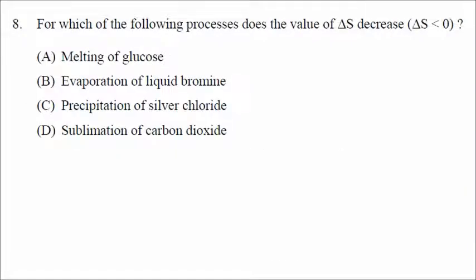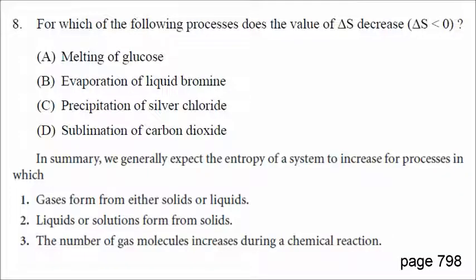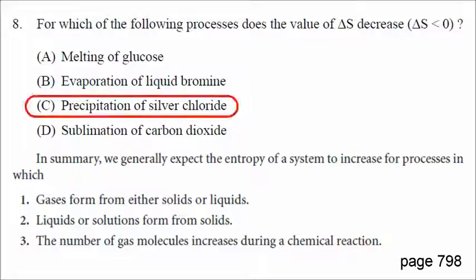Number eight: for entropy to decrease, the system should become less random or more ordered. The system becomes more random going from liquid to gas, solid to liquid, solid to gas, or when the number of gas molecules increases. Melting — solid to liquid — entropy increases. Evaporation — liquid to gas — entropy increases. Sublimation — solid to gas — entropy increases. Precipitation forms a solid, so that is the only example where entropy decreases. Number eight is C.